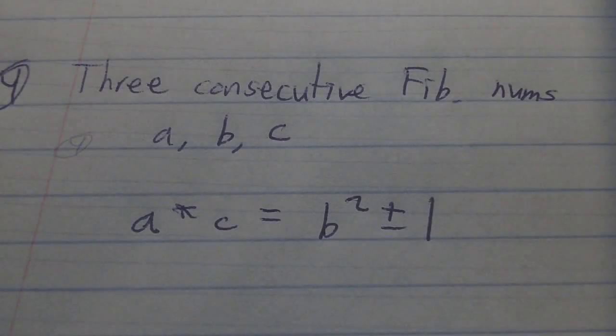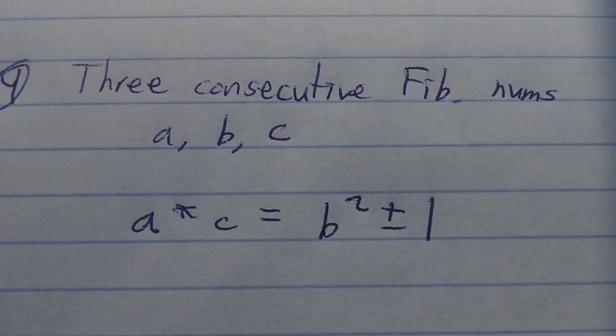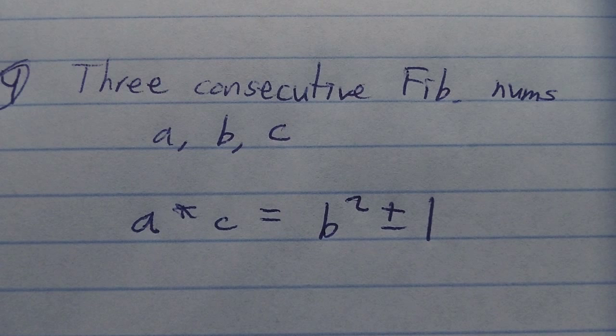The fourth interesting fact is that if we have three consecutive Fibonacci numbers, call them a, b, and c, then we know for a fact that a times c is equal to b squared plus or minus 1.